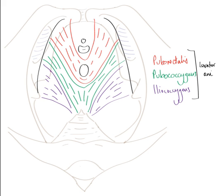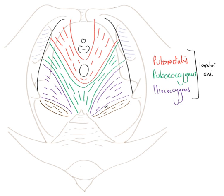The final muscle that forms the pelvic diaphragm is coccygeus. This muscle runs from the ischial spine to the coccyx, drawn here in brown. It is the most posterior muscle of the pelvic diaphragm, and again we have two coccygeus muscles, one on the left side and one on the right side.